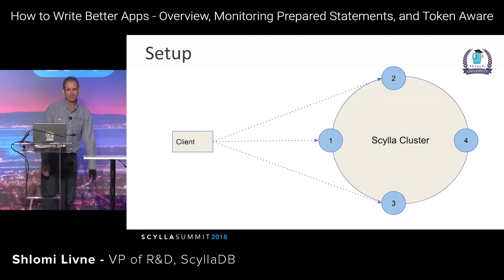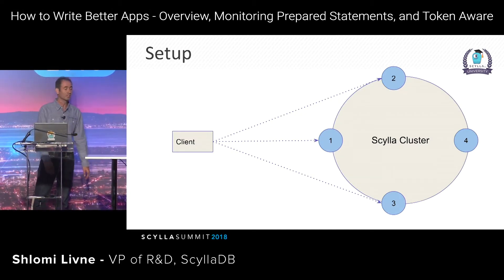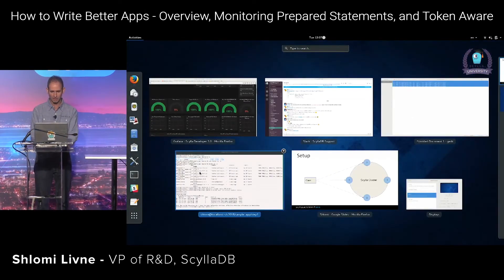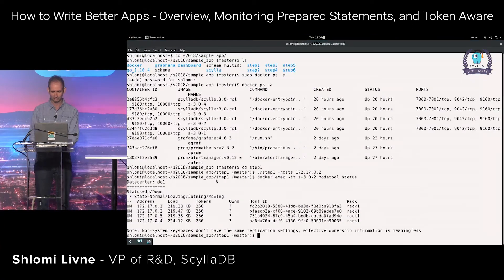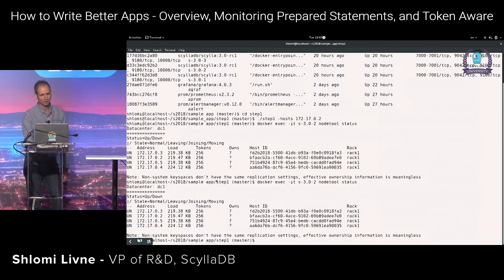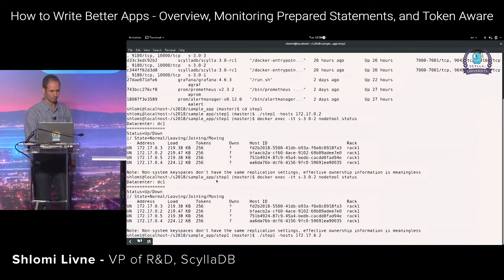The setup: the sample app starts with four nodes, a single client, a single cluster. I have a four-node cluster running in Docker — not yet with Docker Compose, but it will be. Let's start the client and get it running.